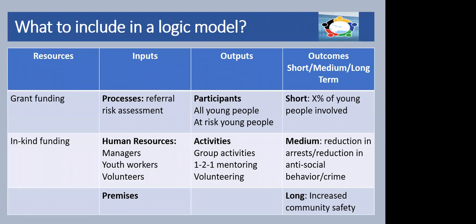Then the other type of outputs are very much the activities. The summer youth group will probably have group activities — a game of pickup soccer or football, a game of pickup basketball, an outing to go bowling. We'd want to record how many of those activities took place. We might also be interested if there was any one-to-one mentoring, or any volunteering — young people who went out to do gardening or painting for elderly people, for example.